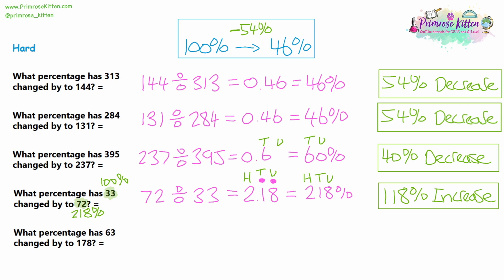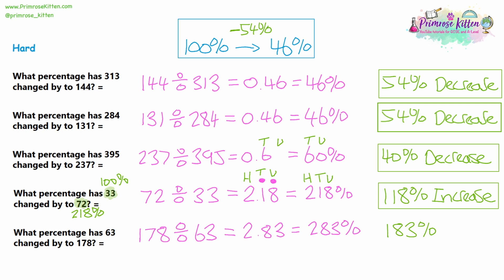Final question — what percentage has 63 changed by to get to 178? We do 178 divided by 63, which gives approximately 2.83, rounding to two decimal places. As a percentage that is 283%. To get from 100% — our original value of 63 — up to 283%, we need to increase by 183%. So 63 has increased by 183% to reach 178.